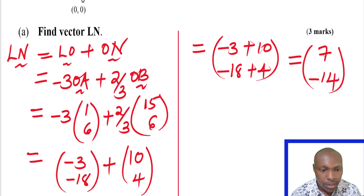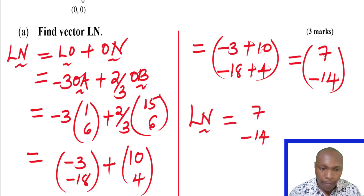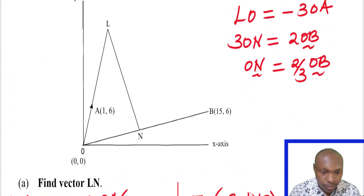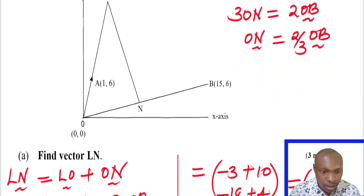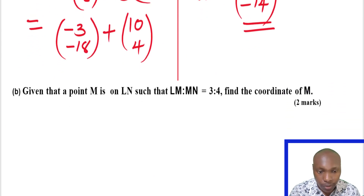Therefore, vector LN equals (7, −14). That is how we work out the first part of the question.